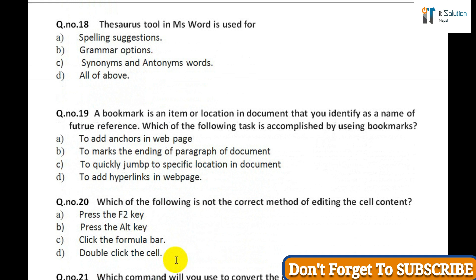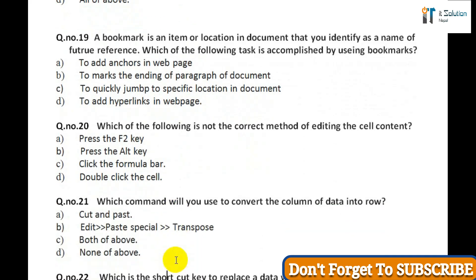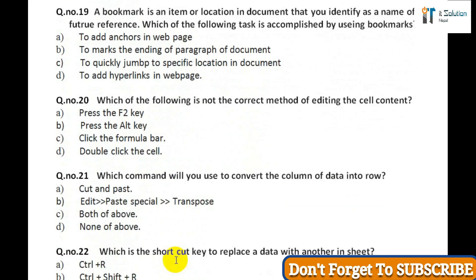Question seventeen: Which of the following function key activates the speller? A) F5, B) F7, C) F9, D) Ctrl+F7. Question eighteen: Thesaurus tool in MS Word is used for: A) Spelling suggestions, B) Grammar options, C) Synonyms and antonyms words, D) All of the above.